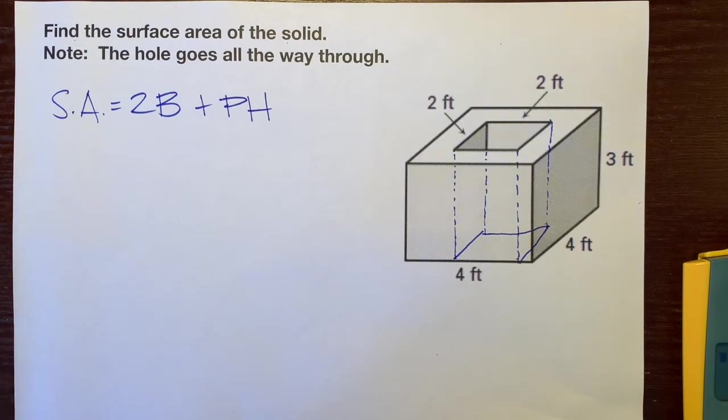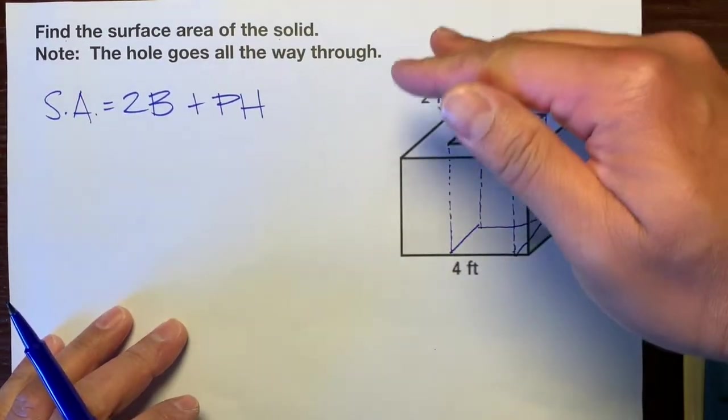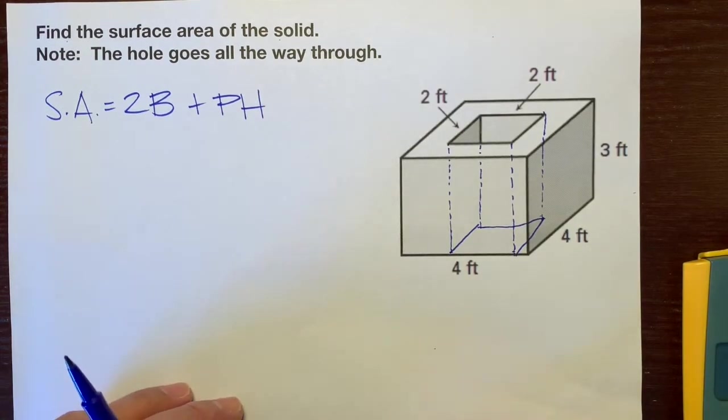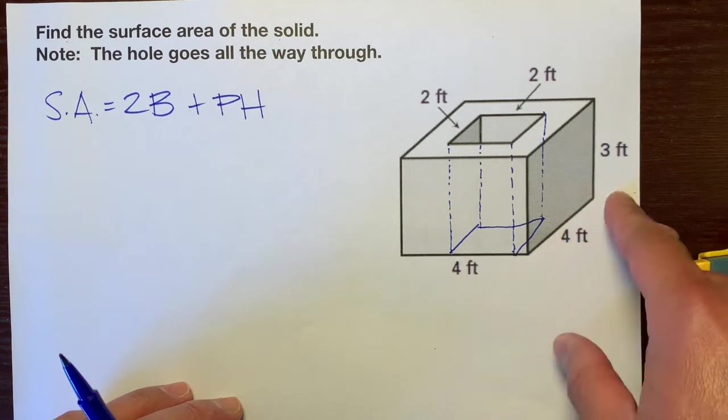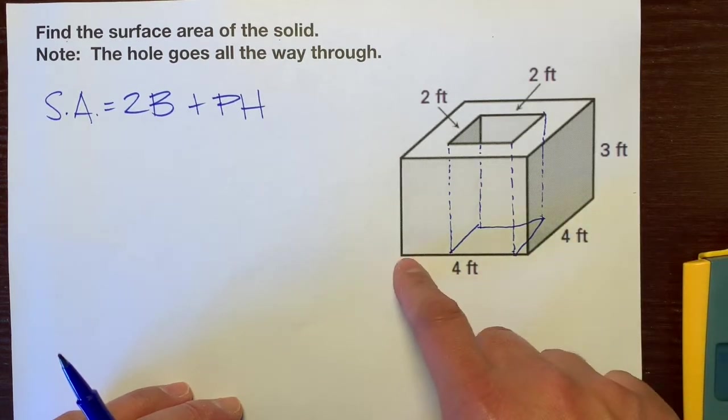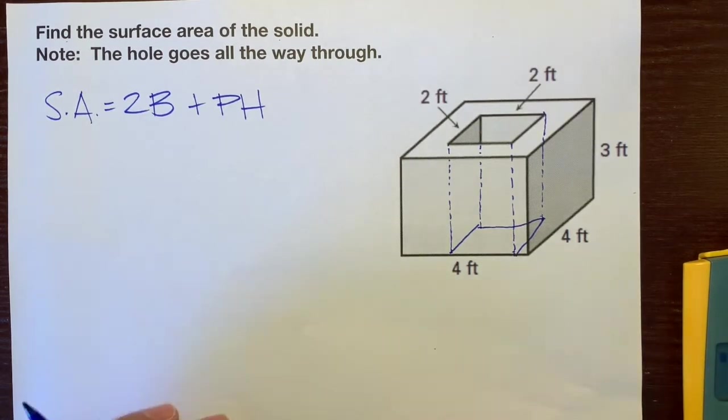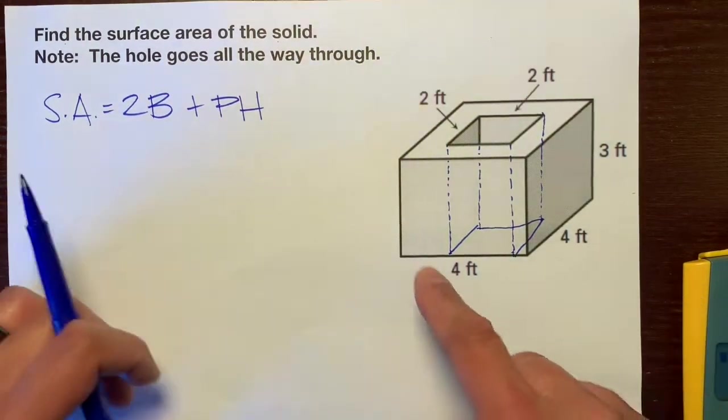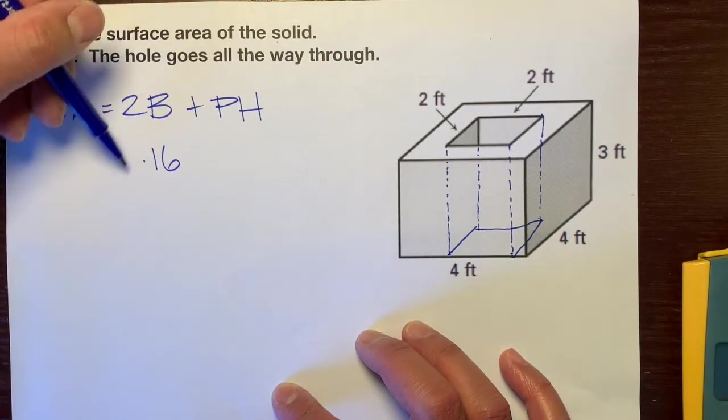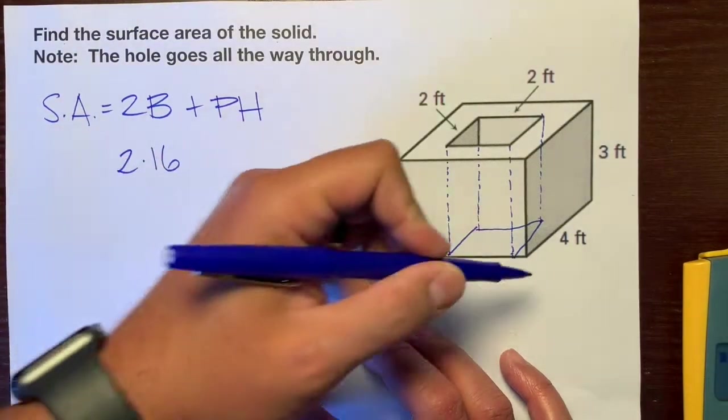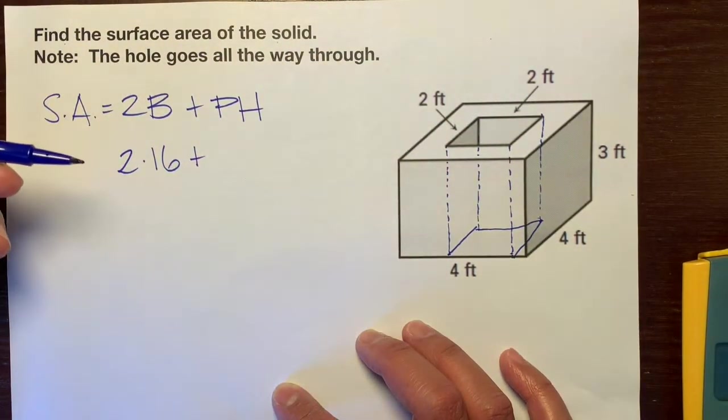Let's make our bases the top and bottom faces. The length from here to here is four, and from here to here is four, so it's a square. The area of a square is base times height, or base times base. So it's 16, four times four is 16, times two for our two bases, the bottom and the top, plus the base perimeter.